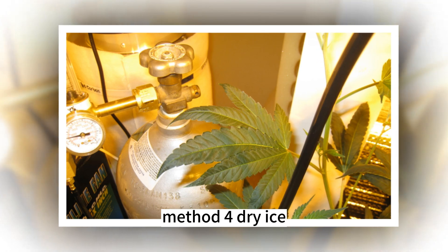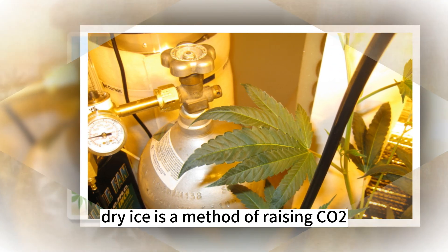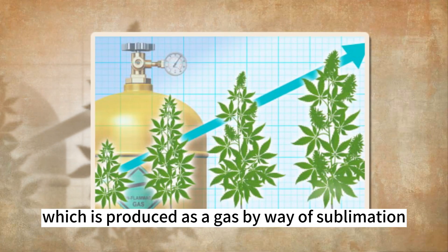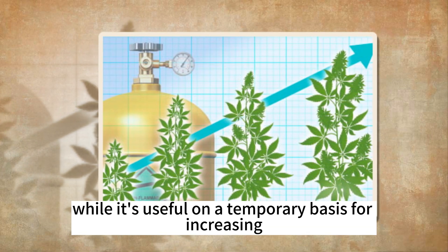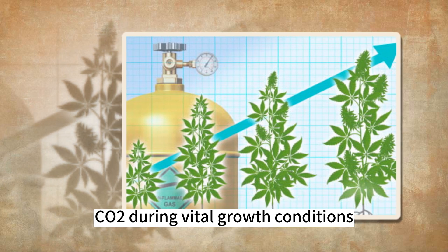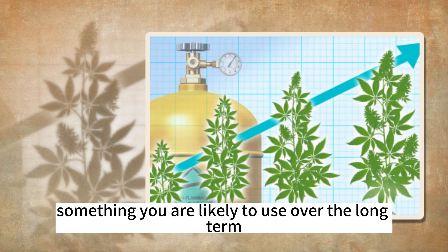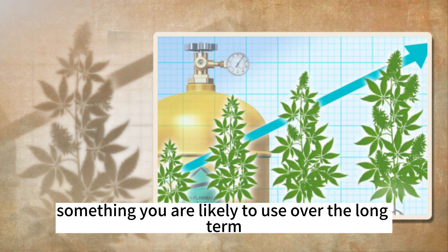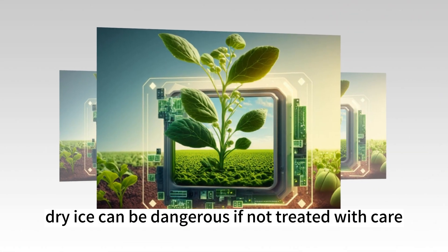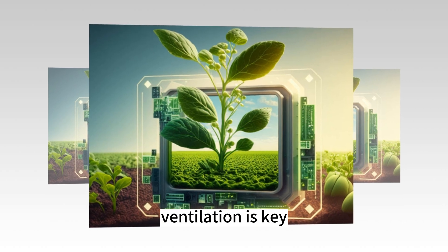Method 4: Dry Ice. Dry ice is a method of raising CO2, produced as a gas through sublimation. While it's useful on a temporary basis for increasing CO2 during vital growth conditions, it is not something you would use over the long term. Be careful — dry ice can be dangerous if not handled with care.